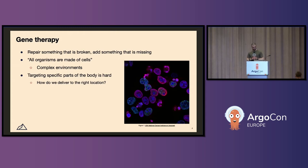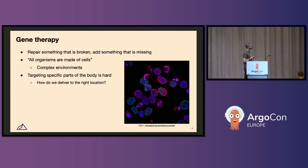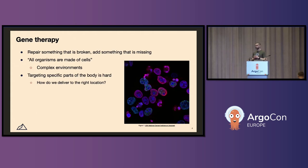Gene therapy, broadly, is a medical modality that is supposed to repair something that's broken or add something that's missing into cells. All organisms are made of cells, including humans — this is universally accepted in the scientific community. Cells are incredibly complex environments. You see all these tiny dots — these cells were stained so they fluoresce under a microscope — and these are components that contribute to chemical reactions that help us function properly. So if some of those components are missing or broken in some way, you get all sorts of diseases.